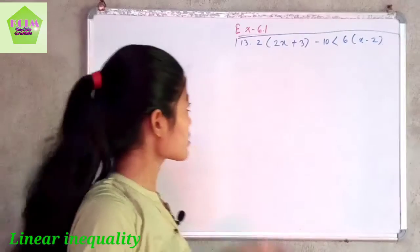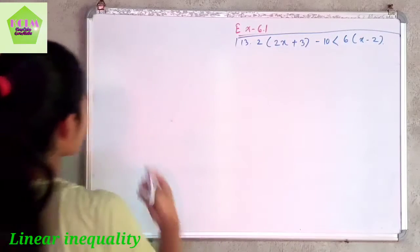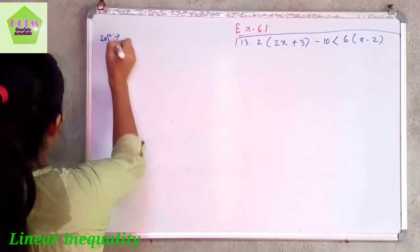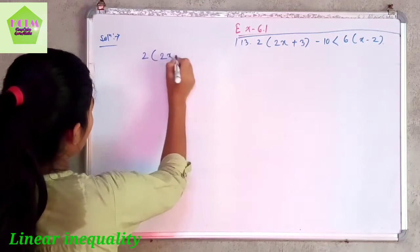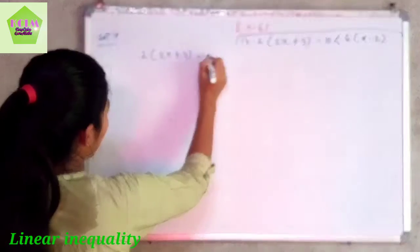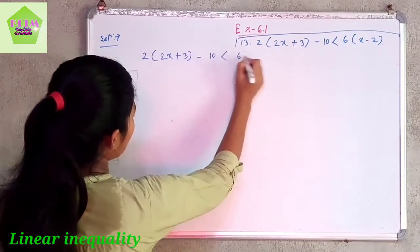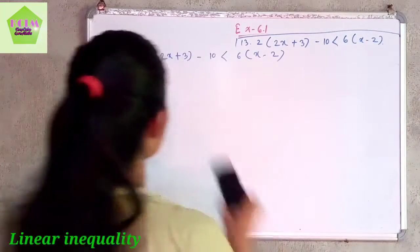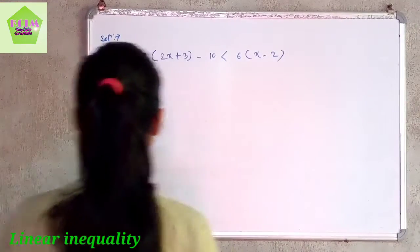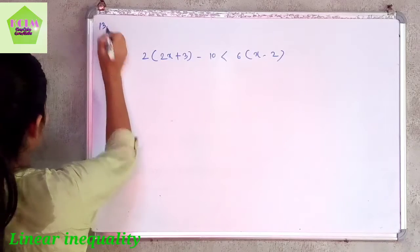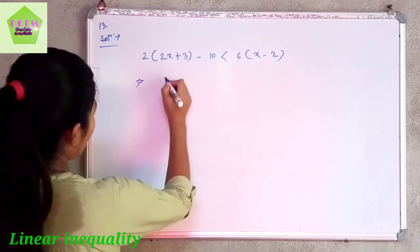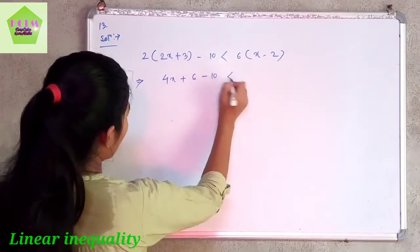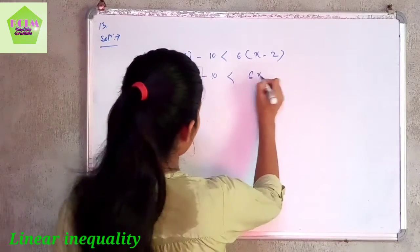Today's last question is question number 13: solve 2 times (2x plus 3) minus 10 less than 6 times (x minus 2). Expanding gives 4x plus 6 minus 10 less than 6x minus 12, which simplifies to 4x minus 4 less than 6x minus 12.